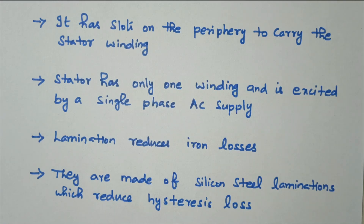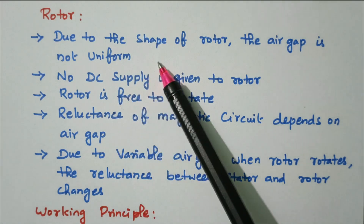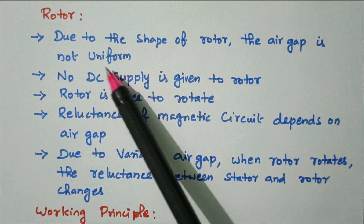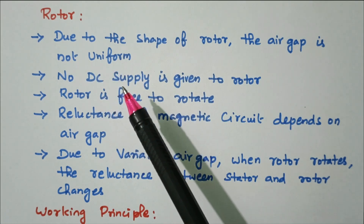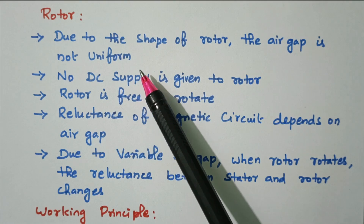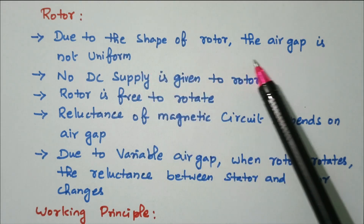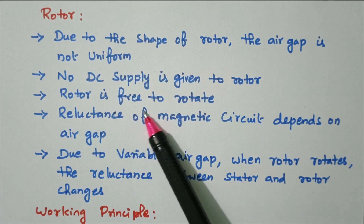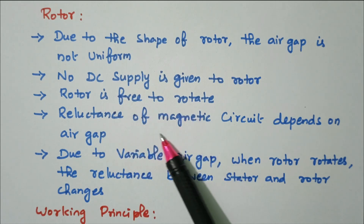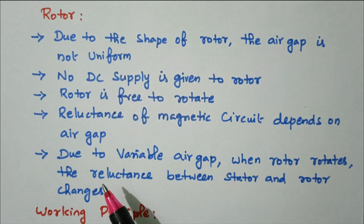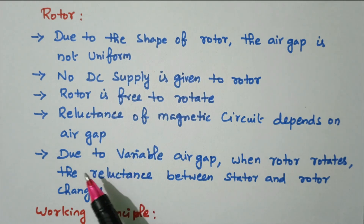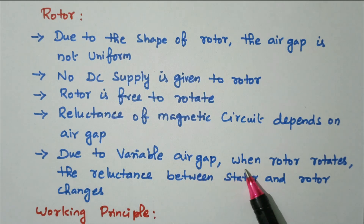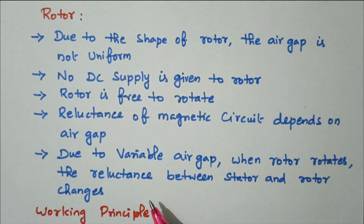Now we'll see the details about the rotor. Due to the shape of the rotor, the air gap is not uniform — in some portions slots are available, in some portions slots are not available. Due to this, reluctance varies and the air gap also varies. No DC supply is given to the rotor; the rotor is free to rotate. The reluctance of the magnetic circuit depends upon the air gap. When the rotor rotates, the reluctance between the stator and rotor also changes — that is why it is called a reluctance motor.